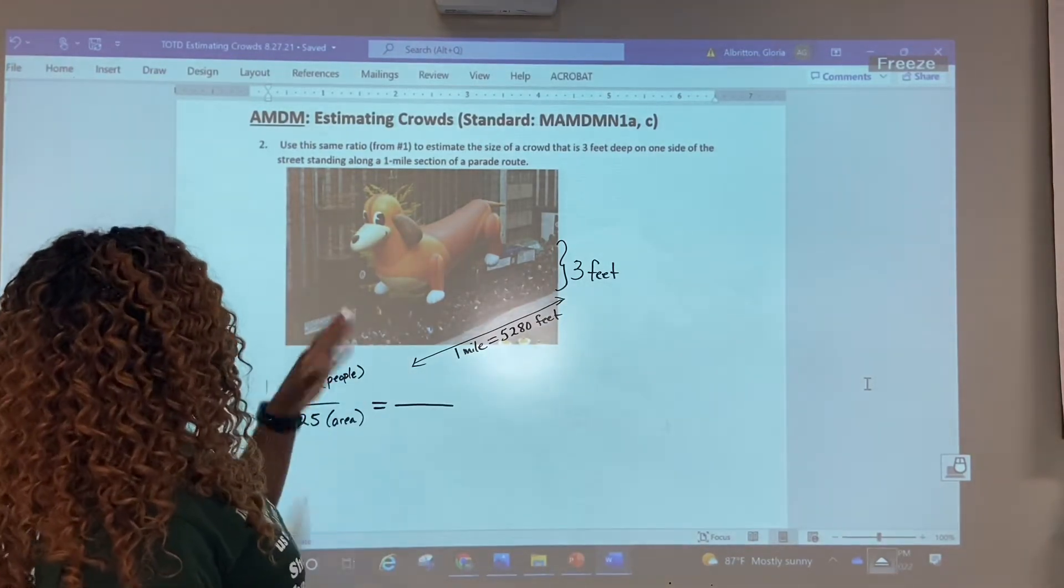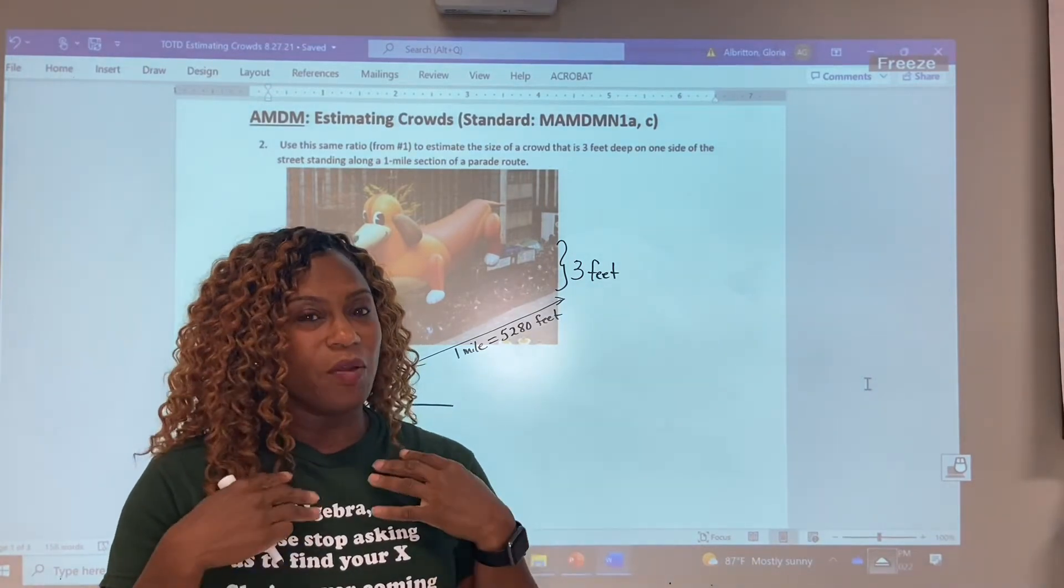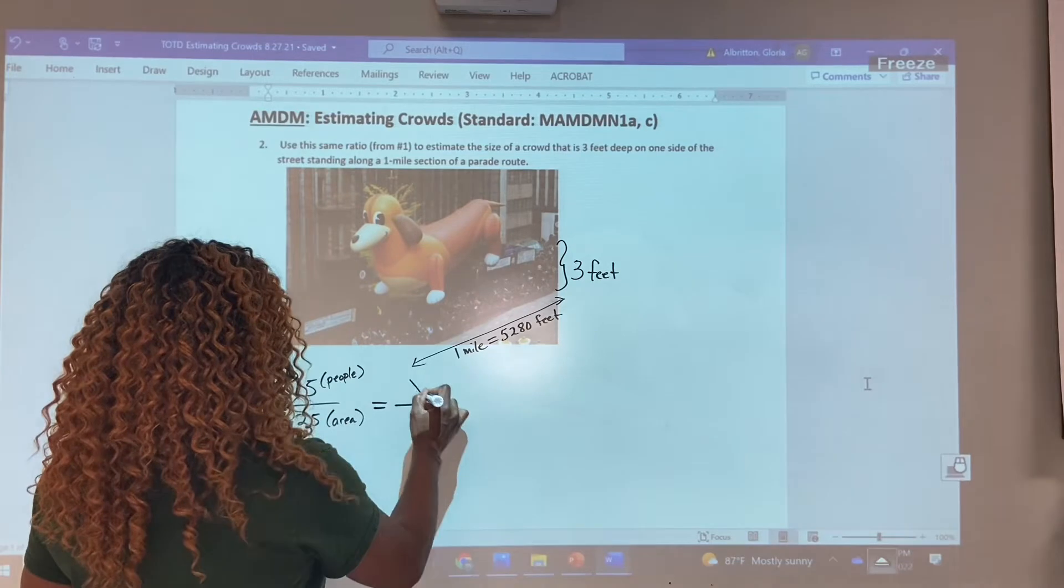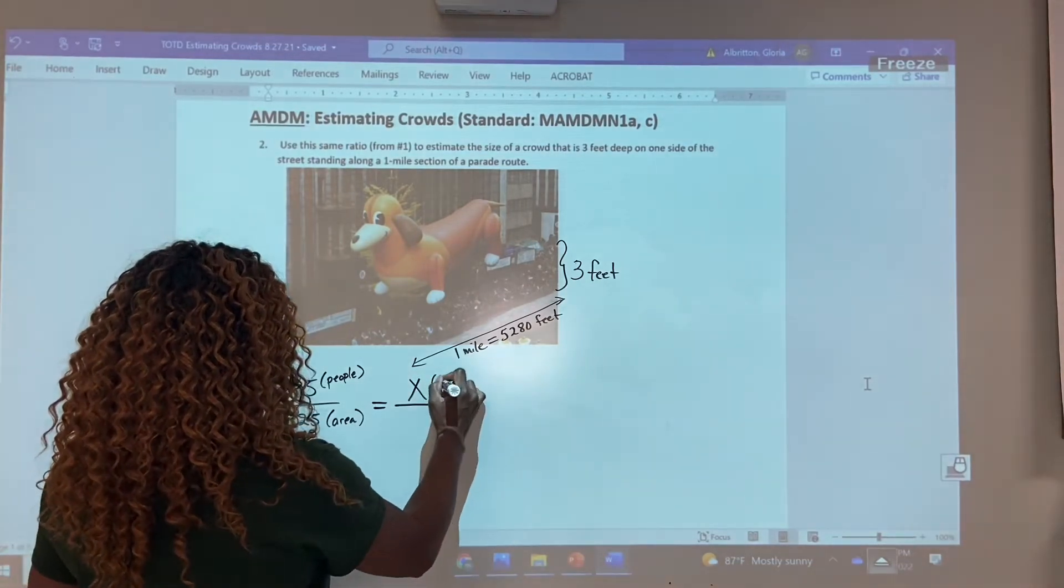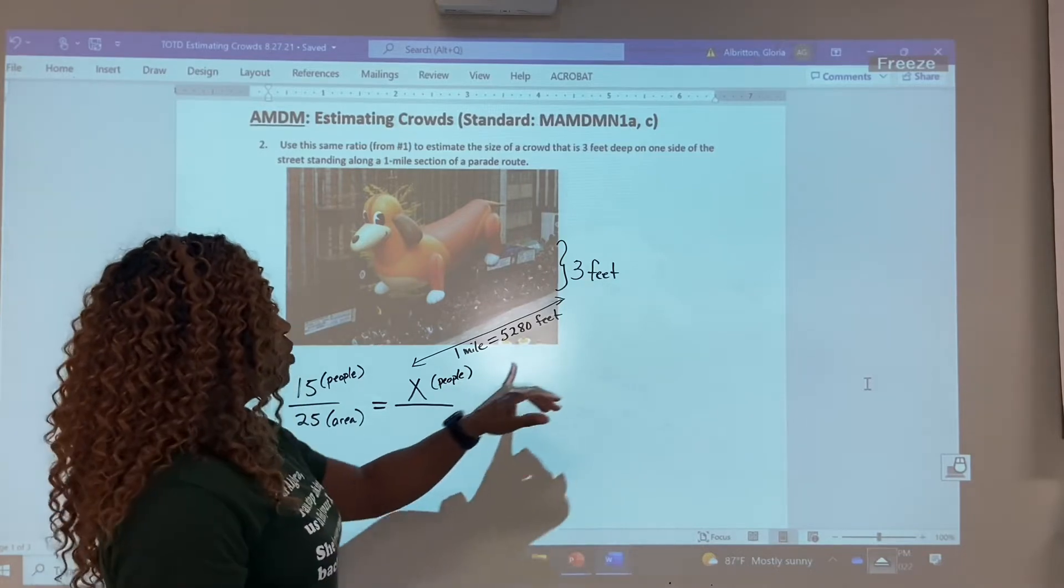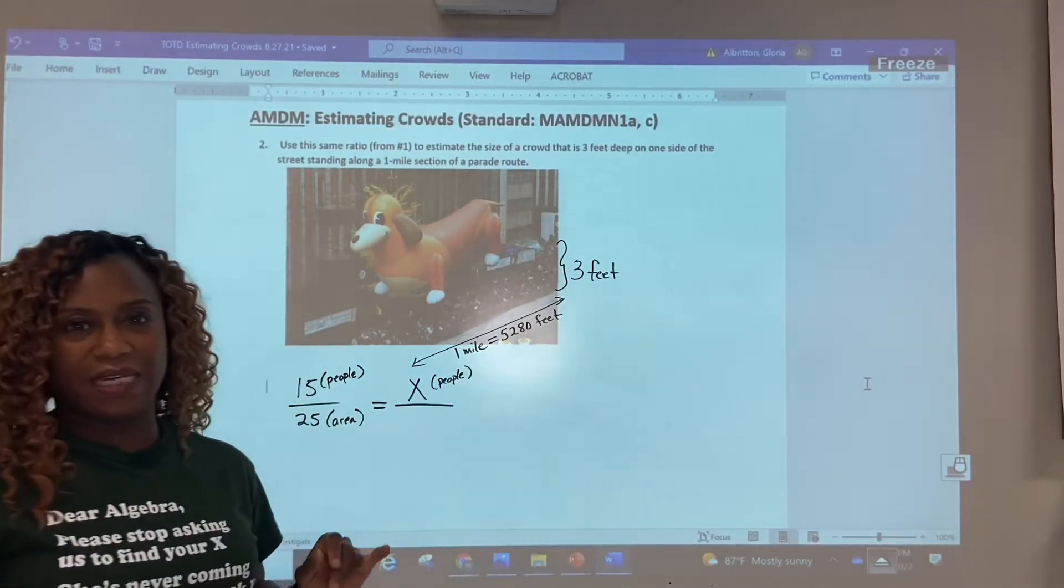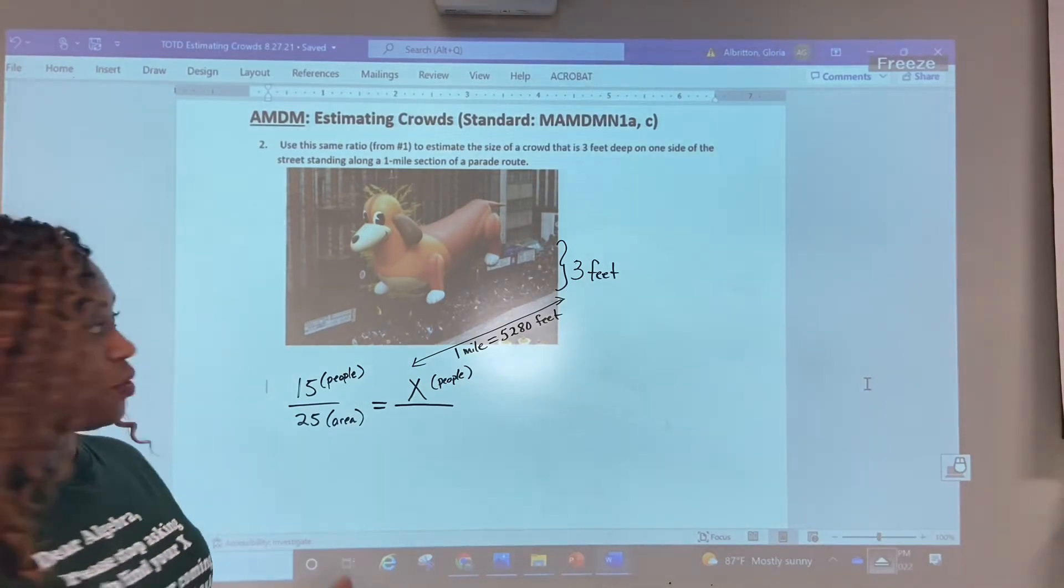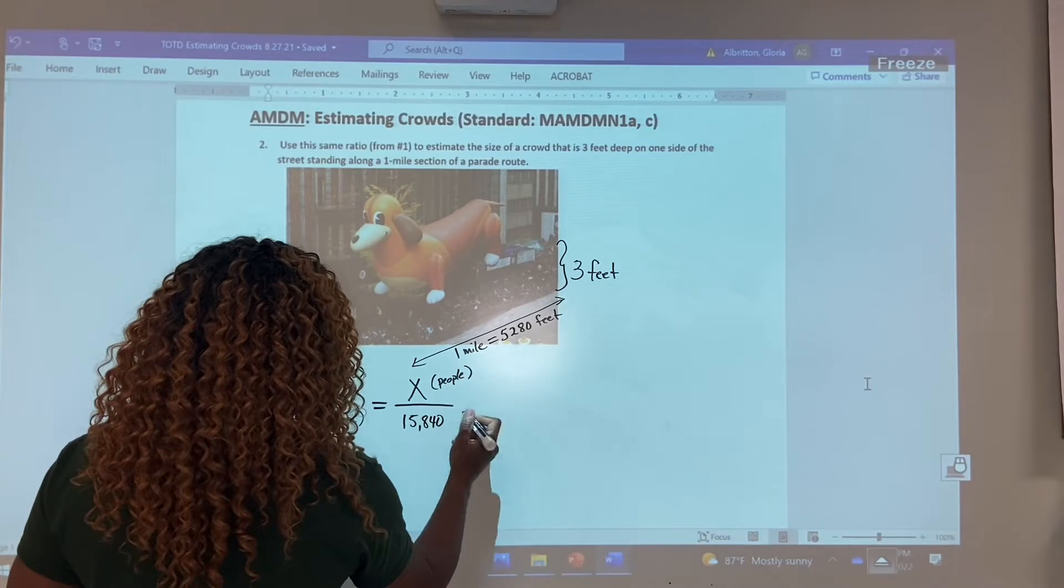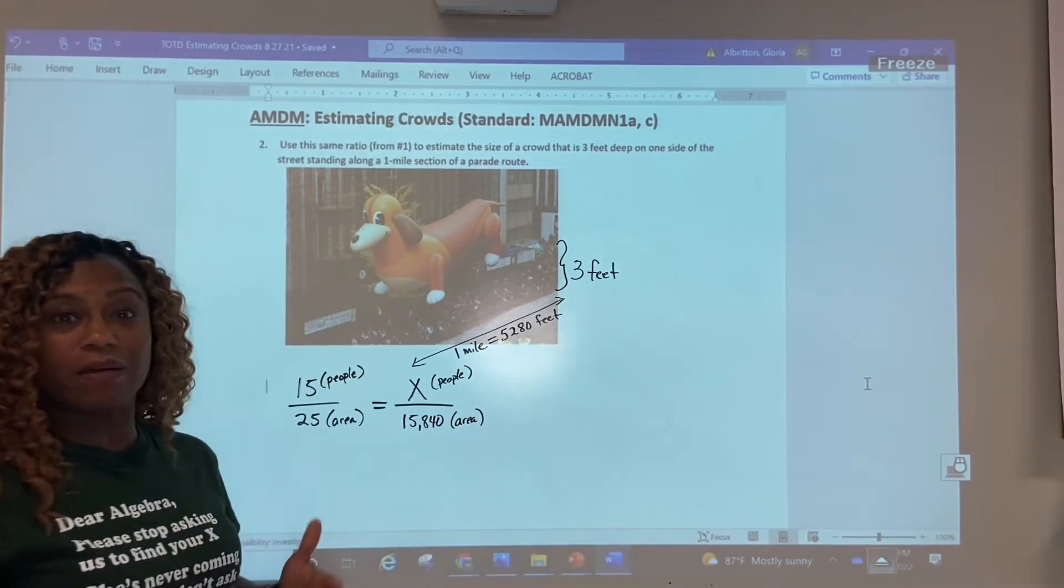Let's go back to our ratio. Since we're asked to estimate the number of people, the size of the crowd, that's the unknown. So that's where the x goes, because we do not yet know how many people will fit. We're going to find out though. But we do know that the area is going to be three times 5,280 feet. That's a huge number, but I've already done it for you. It is 15,840 square feet. So there's the area of the parade route that we're looking at.